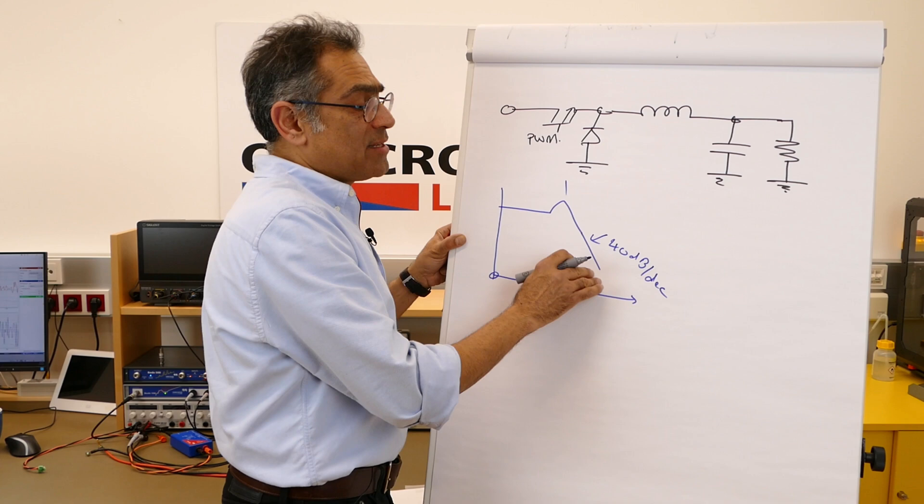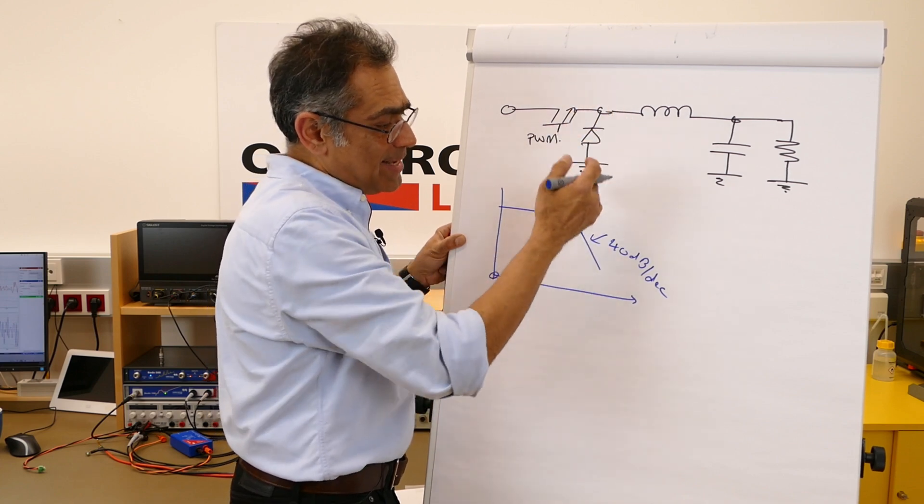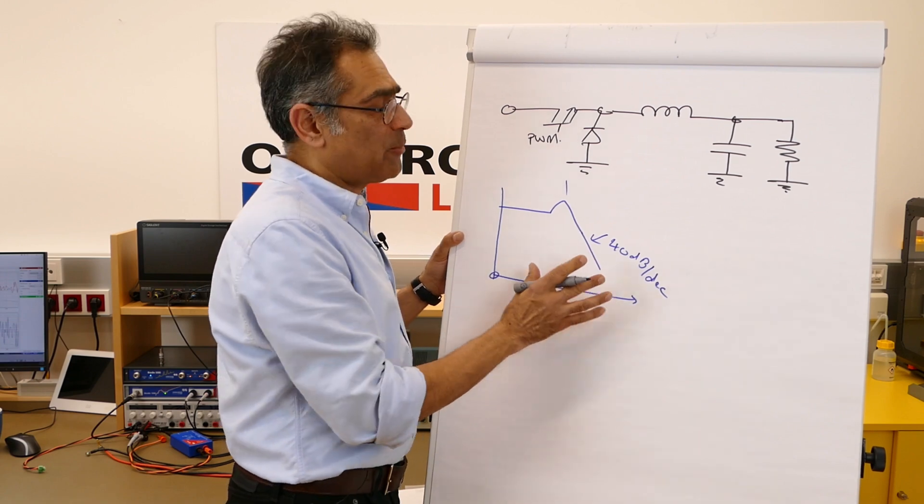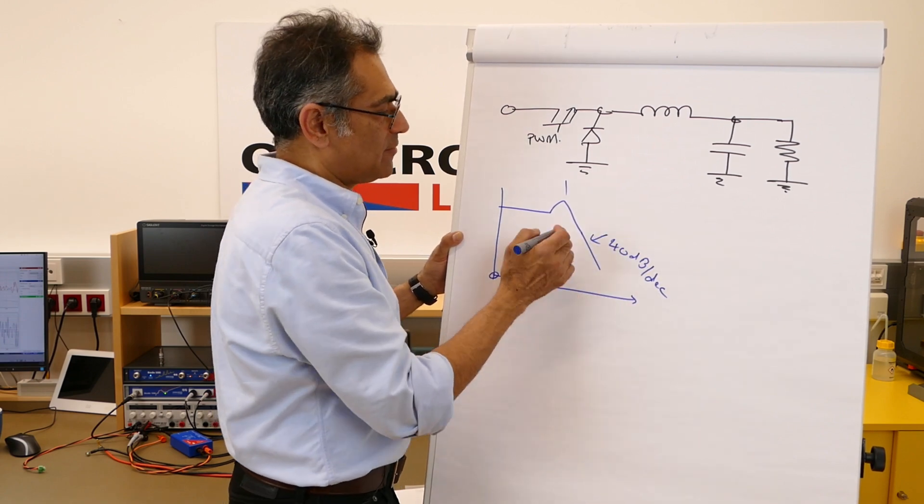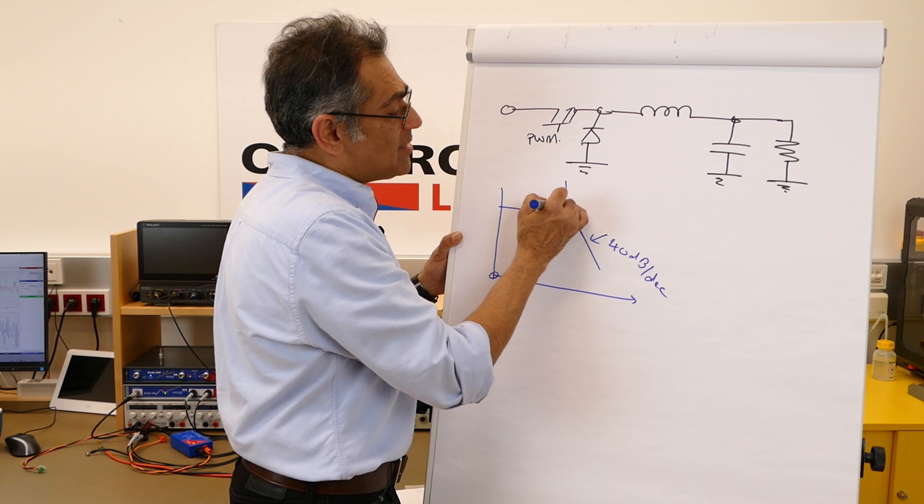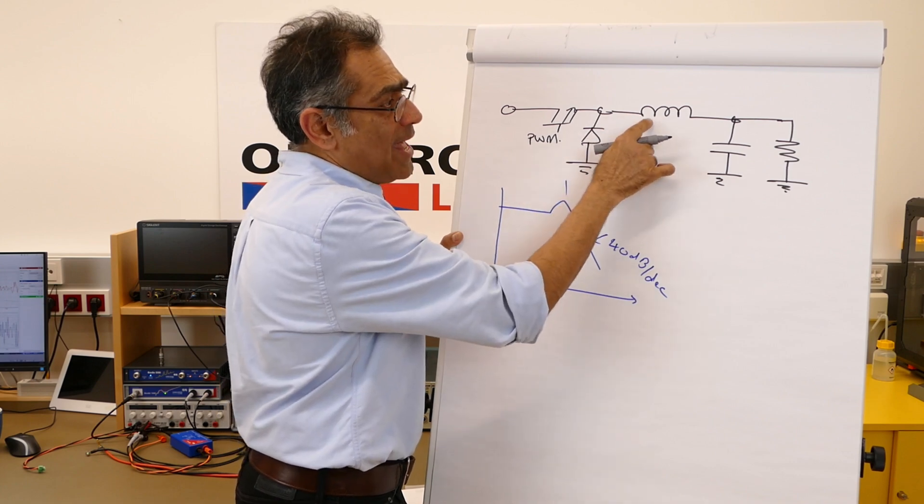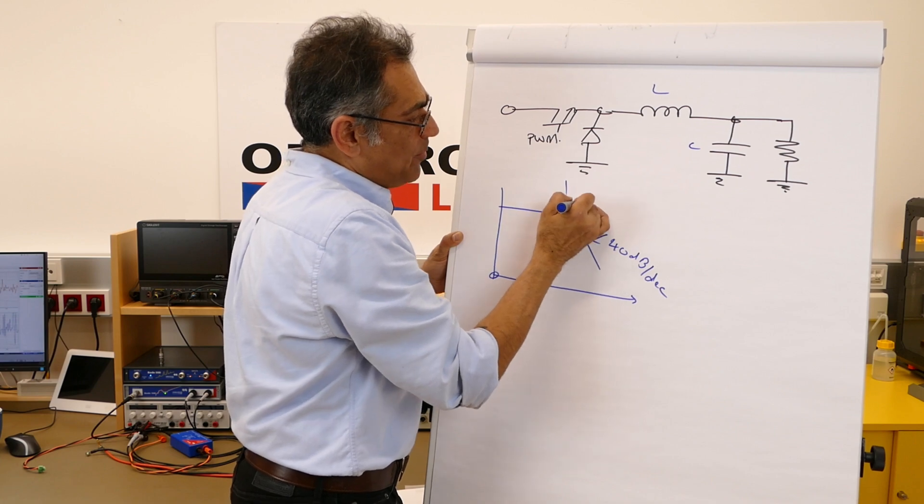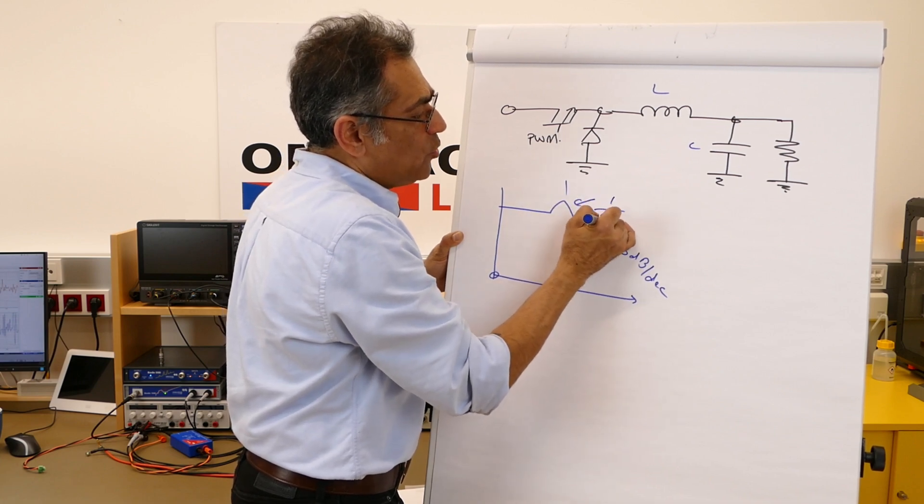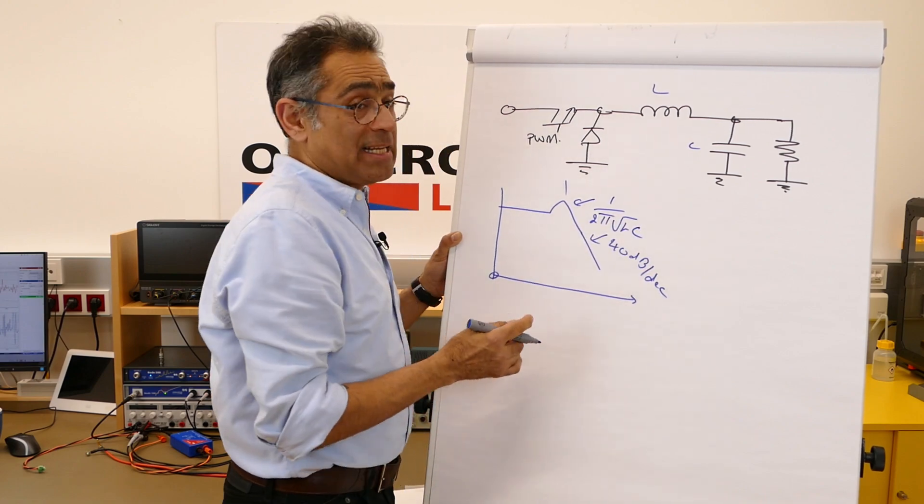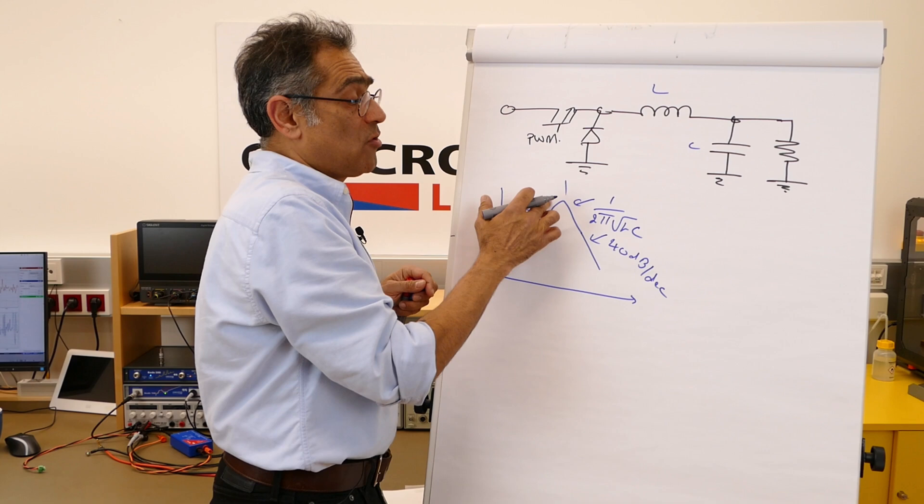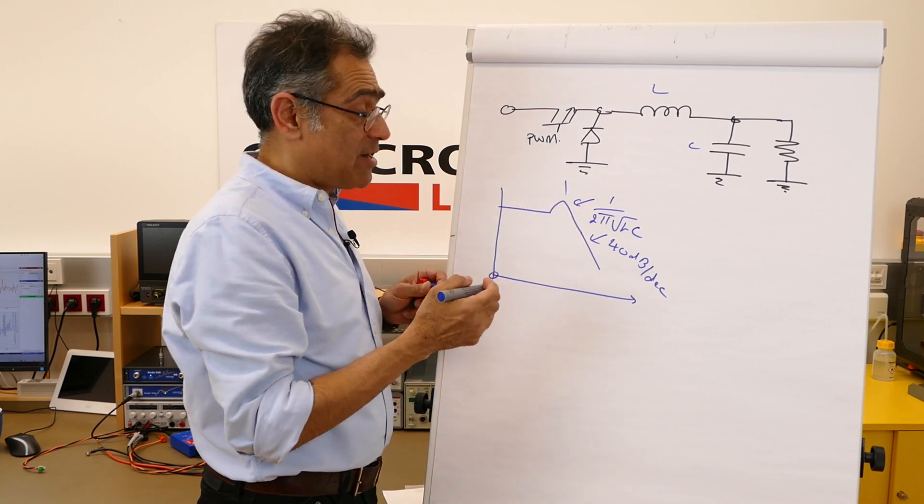For now I'm ignoring the ESR of the capacitor. When it hits the ESR of the capacitor, this actually flattens out to 20 dB per decade, but for simplicity let's just ignore that for now. This resonant bump is a result of this L and C and it happens at 1 over 2π times the square root of LC. It's an LC filter, depending on the Q, how much damping you have, you'll have a certain amount of resonance.